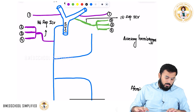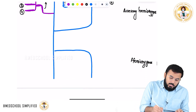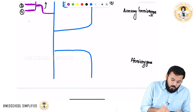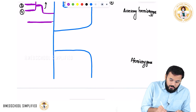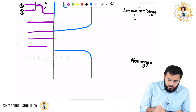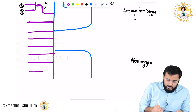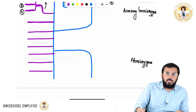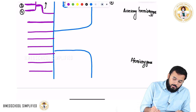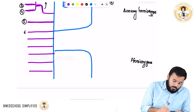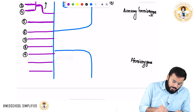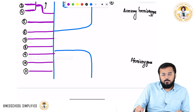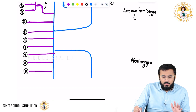Coming to the remaining branches — after four, we have branches five, six, seven, eight, nine, ten, and eleven on the right side. All these branches directly drain into the azygous vein.